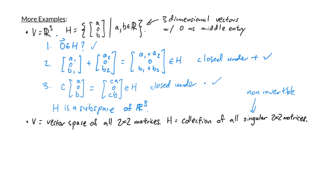Let's check the three conditions. First, is the zero vector in H? For the vector space of 2×2 matrices, the zero vector is the matrix [[0,0],[0,0]]. Its determinant is 0, which means it's not invertible, so it is in H. The first condition is satisfied.